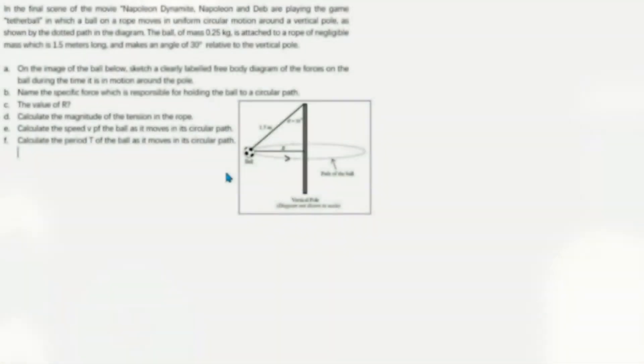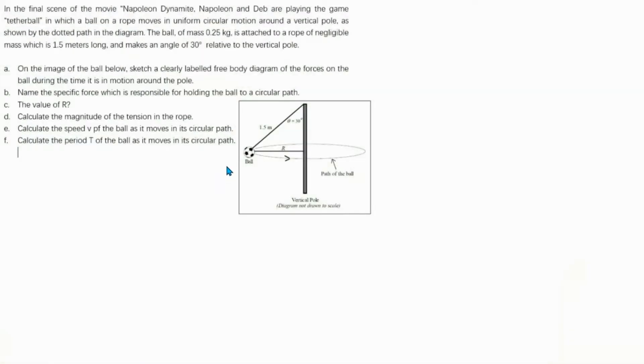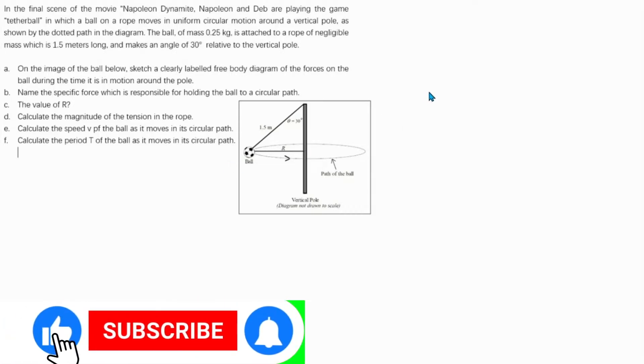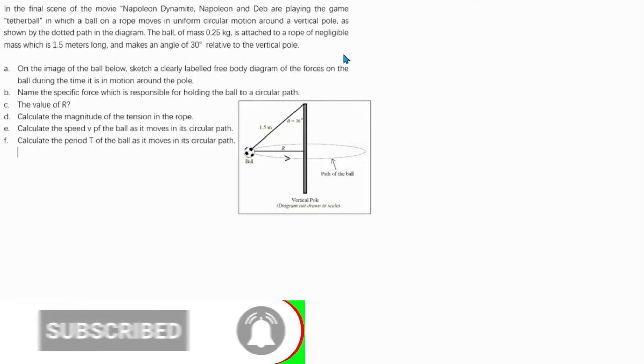In the final scene of the movie Napoleon Dynamite, Napoleon and Deb are playing tetherball, in which a ball on a rope moves in circular motion around a vertical pole. The ball has a mass of 0.25 kilograms attached to a rope of negligible mass which is 1.5 meters long and makes an angle of 30 degrees.